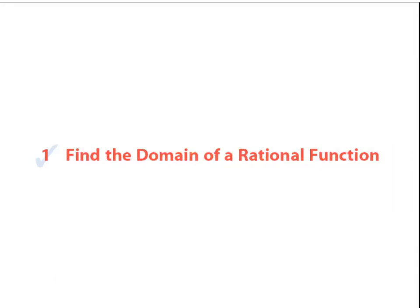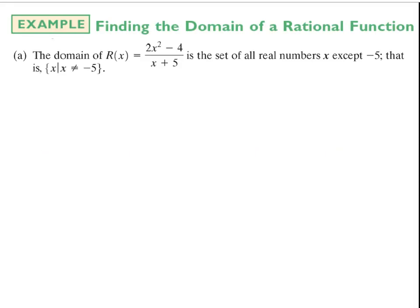Speaking of division by 0, let's look at a couple of examples. We're going to find the domain of a rational function — this is our first objective for this section. Letter A gives us the rational function (2x² - 4) / (x + 5). When we talk about the domain, we can't have division by 0, so x + 5 can't equal 0, meaning x can't equal negative 5. The domain is all real numbers except x = -5.